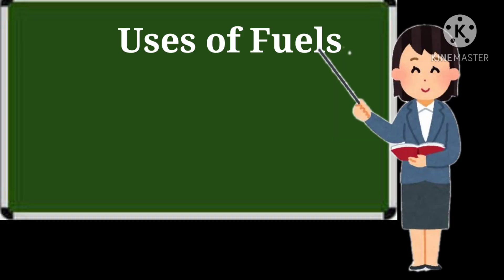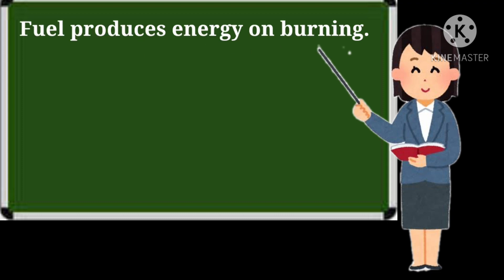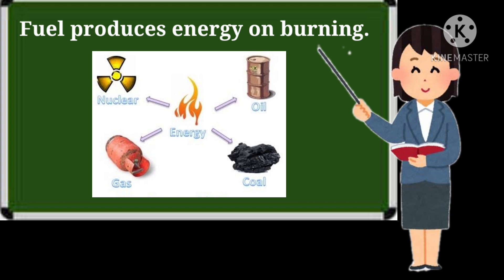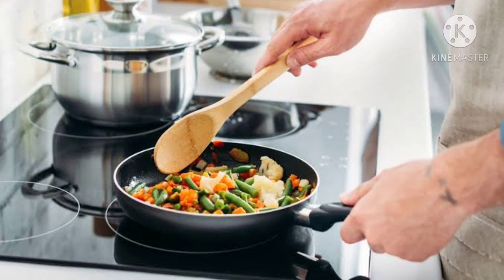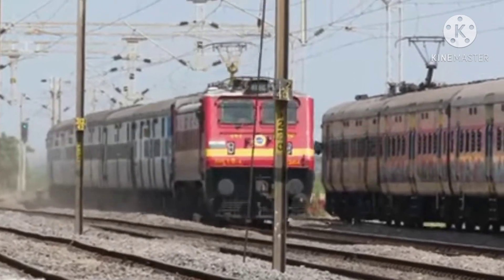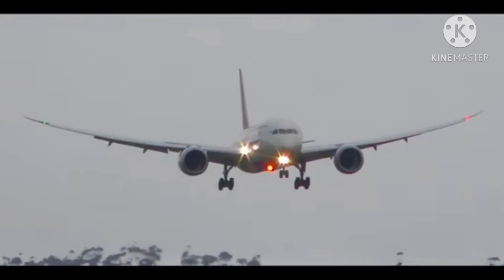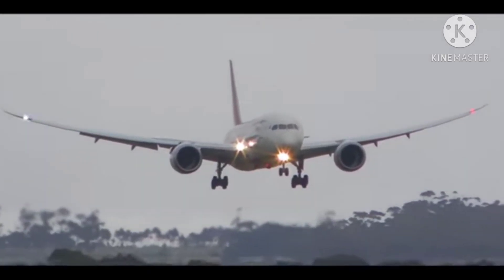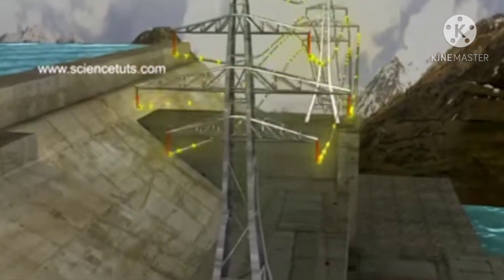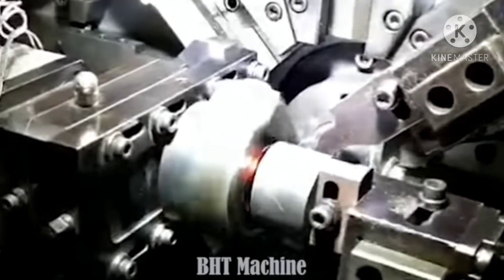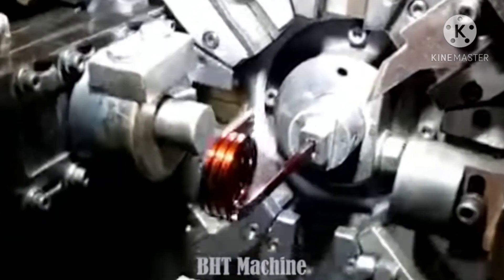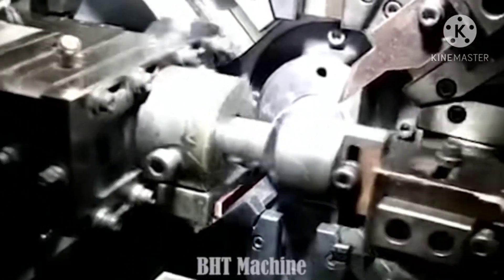Now children, we will learn about the uses of fuels — ki fuels kahan par istimaal kiye jaate hain. Hum jaante hain ki fuels produce energy on burning, aur ye energy bahut saare kaamon ke liye chahiye. Hume energy chahiye for cooking, trains ki movement ke liye, gadiyon ke chalne ke liye, aeroplanes ke udne ke liye, for generating electricity, for running various machines, and so on.